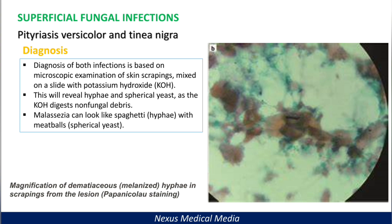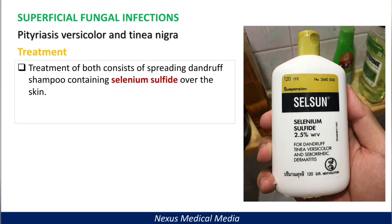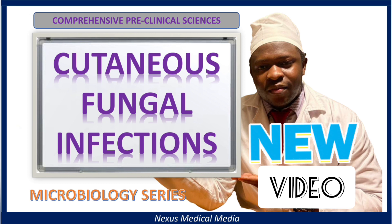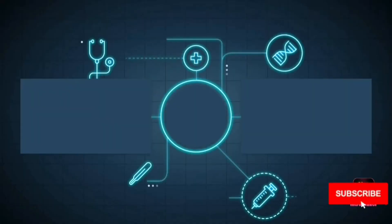Treatment of these two infections is straightforward. Spreading a dandruff shampoo containing selenium sulfide over the infected skin is inexpensive and effective. You can also use topical antifungals such as imidazoles, for example miconazole or ketoconazole. If you enjoyed this video, please give a thumbs up and subscribe.